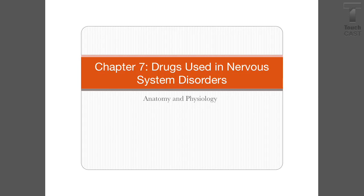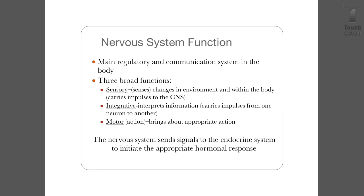Anatomy and physiology of the nervous system. Our nervous system is our main regulatory and communication system in our body and there are three functions: sensory, which notices the changes in our environment; integrative, which interprets that information and moves it along the neurons; and motor, which brings about the appropriate action and tells us what to do. Our nervous system also sends signals to our endocrine system to tell our body what hormones we need to secrete.